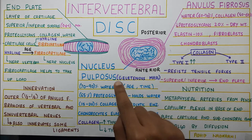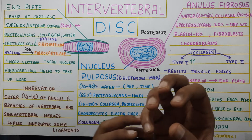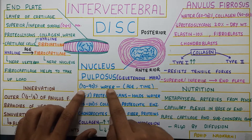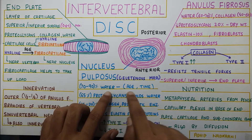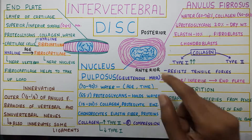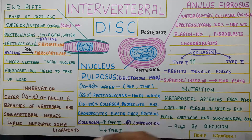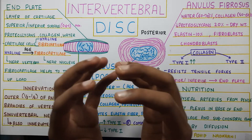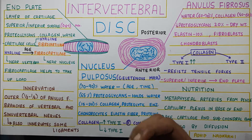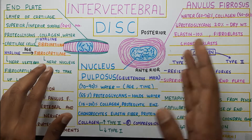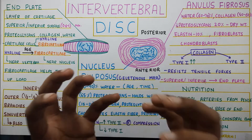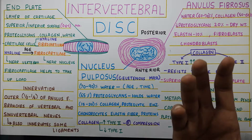The nucleus pulposus is a gelatinous material — it has a lot of water in it. It contains 70 to 90 percent water, and this varies with age and time. When you are younger there is more water, and also early in the morning when you wake up, the nucleus pulposus retains a lot of water compared to later in the day. This water makes your disc bulge and actually increases your height in the early morning compared to later at night.